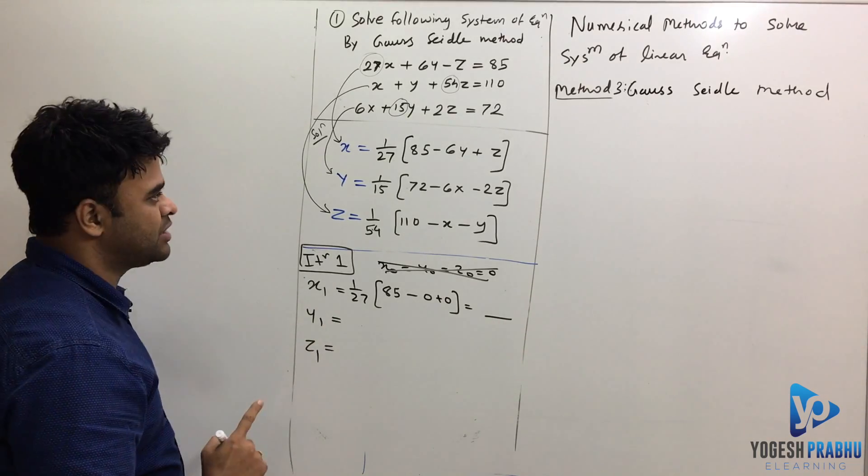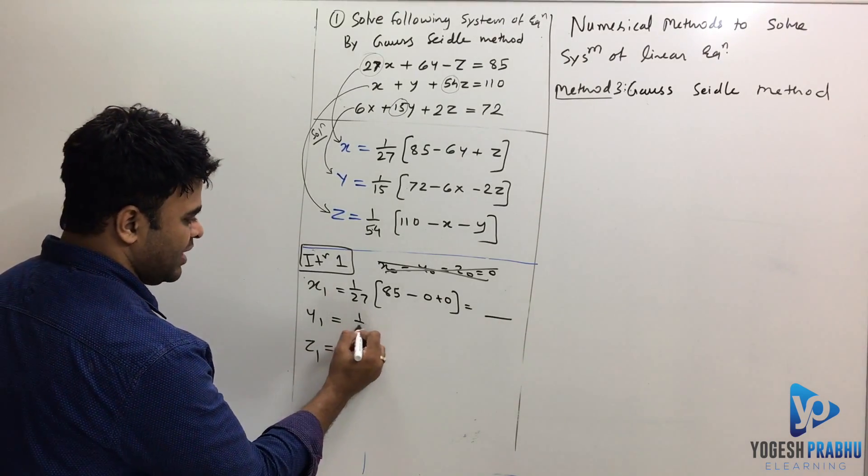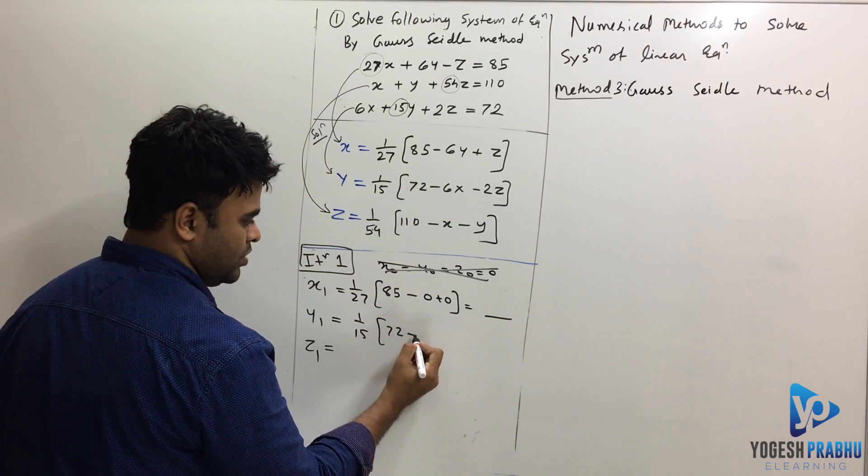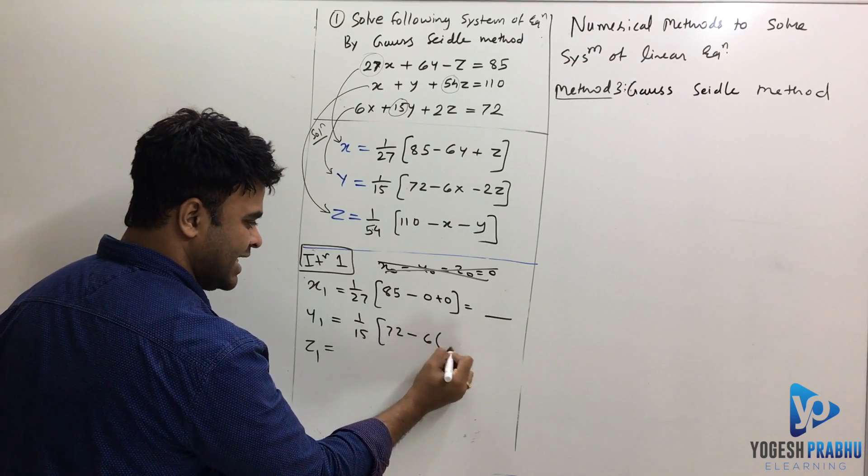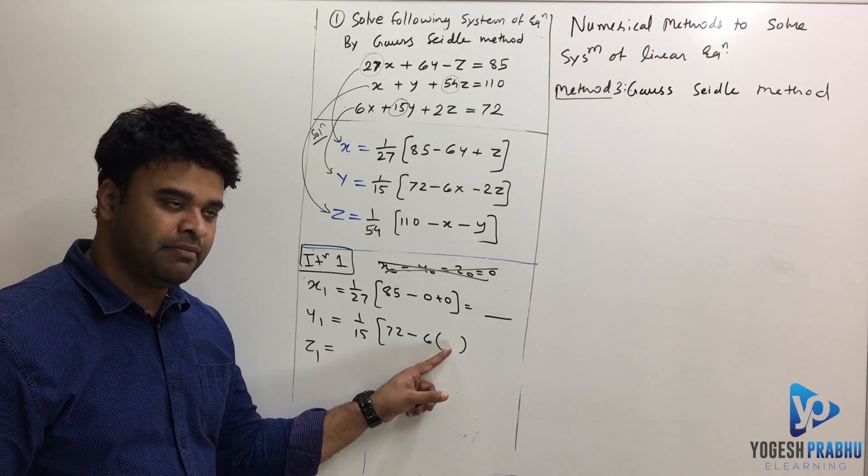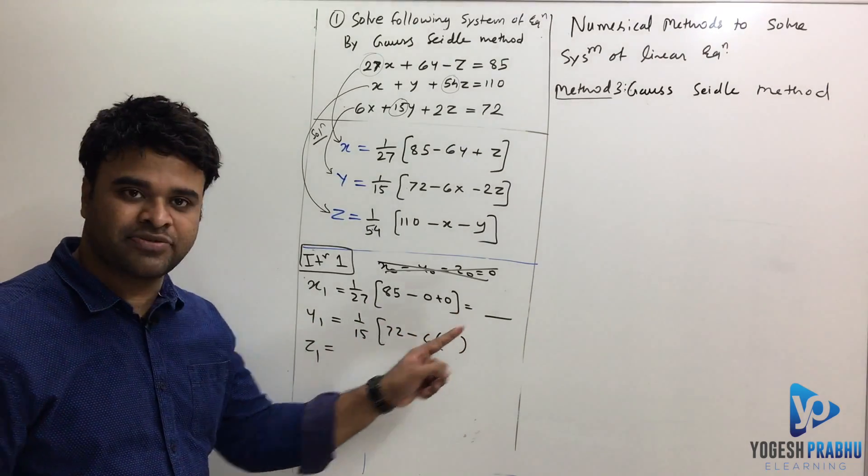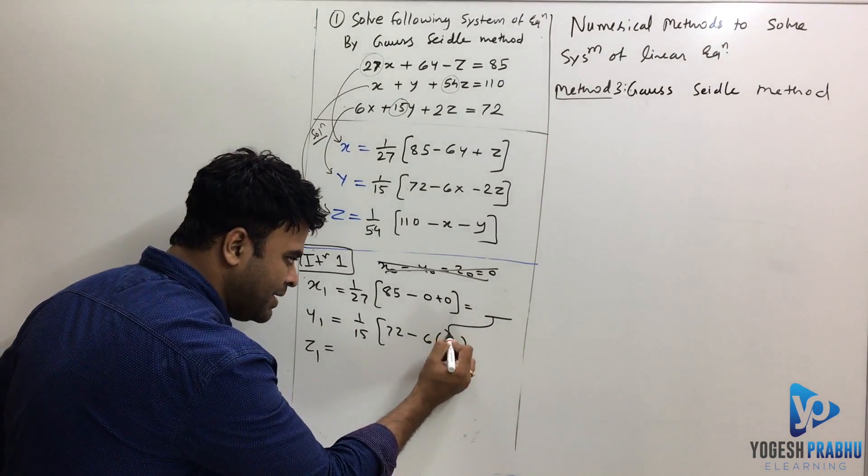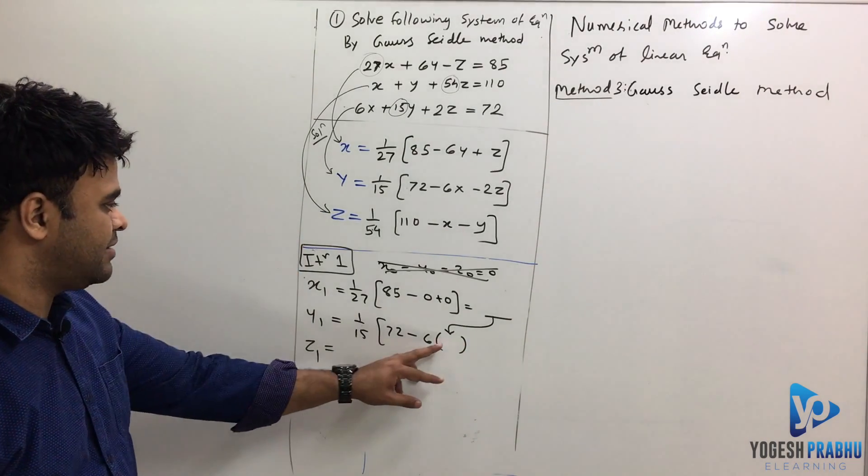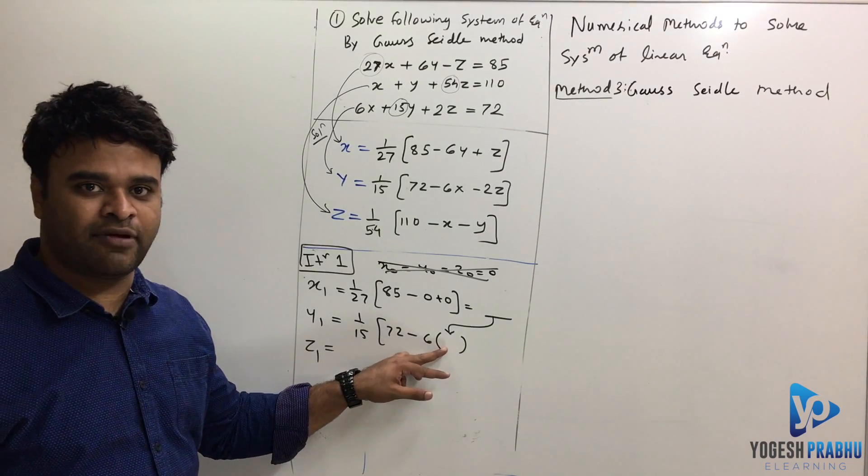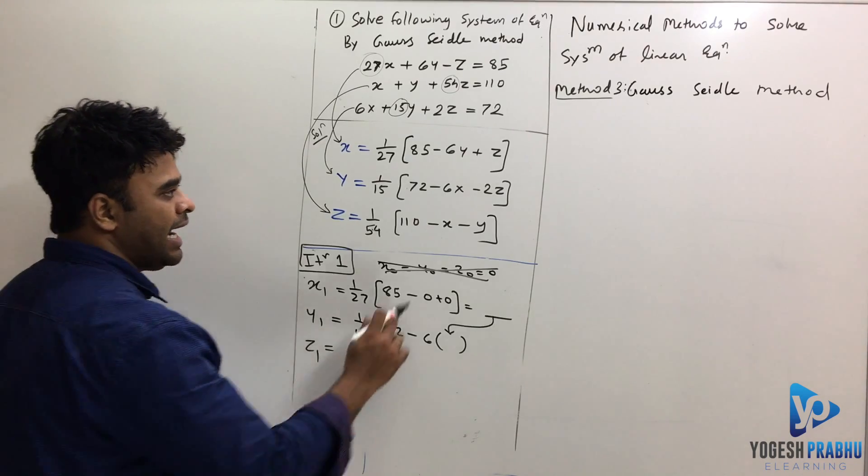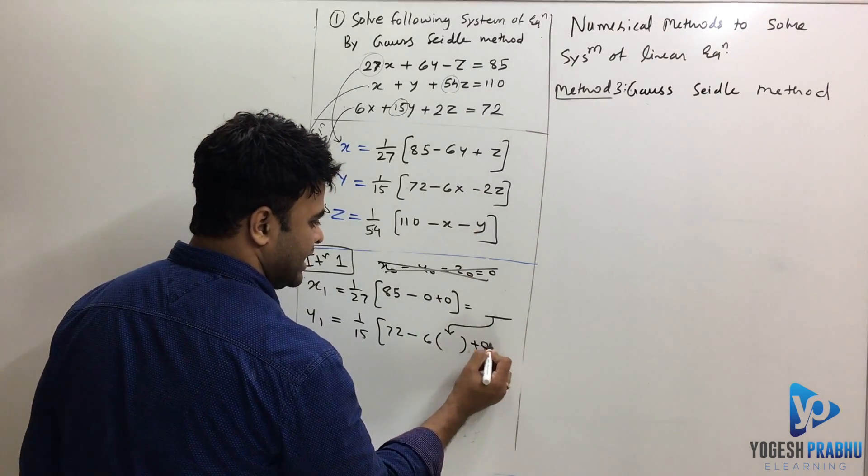Now when you find y1, now pay attention to this. This is 1 upon 15, I will use this equation here, 1 upon 15, this is 72 minus 6x. Now here, you are not going to write 0, because you have just obtained one value of x1 and this obtained value will immediately use in this x here. And with that, it is a little bit improvement from the Jacobi's method and basically can get your answer a little faster. And then anyway, z we don't have, so write this as 0.